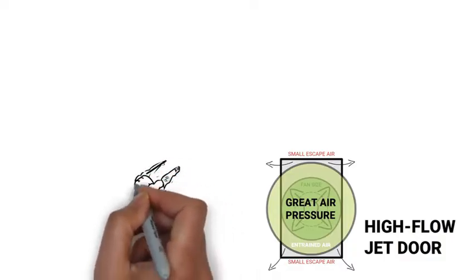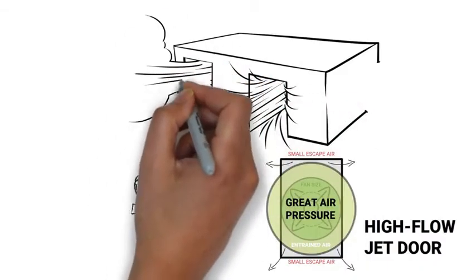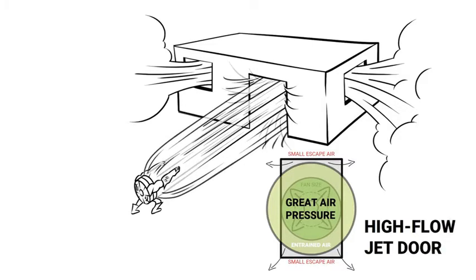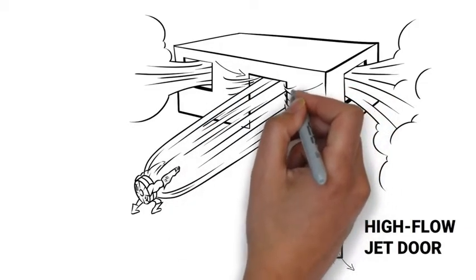So what is high flow jet technology really? Well, it's an expansion jet. It starts out as a powerful jet stream of air, which then expands beyond the size of the shroud as it flows out, allowing more air to be entrained and driven into a structure.